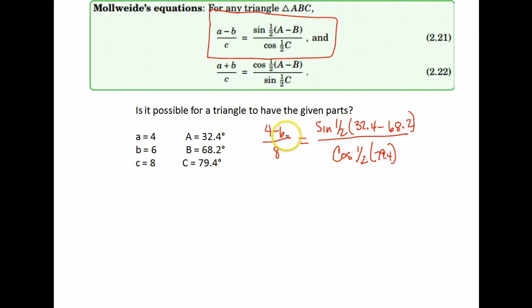I'm going to simplify this a little bit. So 4 minus 6 is negative 2 over 8. Then on this side, 32.4 minus 68.2 gives me negative 35.8. Then I need to take that times a half or divide it by 2, and I end up with the sine of negative 17.9.